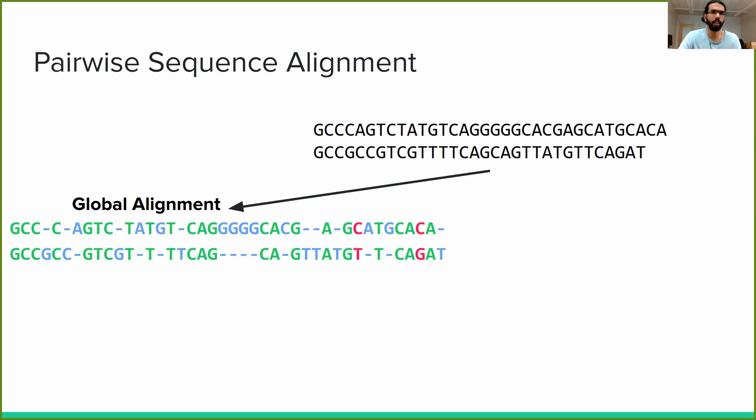Here, we have lined up the entirety of our two sequences to construct what is called a global alignment. Green represents columns in which both sequences have the same letters, which are matches. Red represents columns in which the two sequences have different letters, which are mismatches. And finally, blue represents columns in which one of the two sequences has a gap character, shown as a dash. These columns are known as indels, which is short for insertions and deletions.